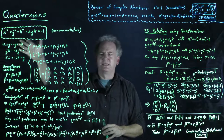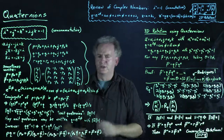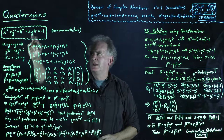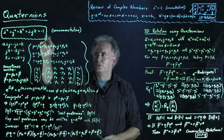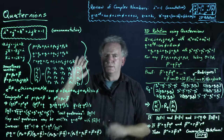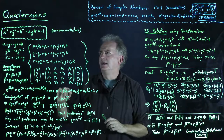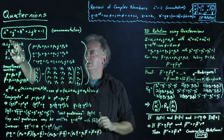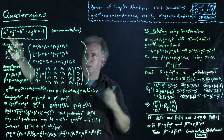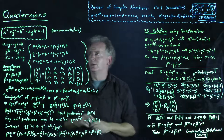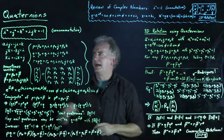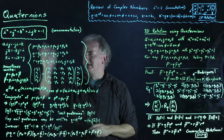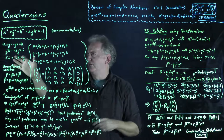The relations that define all of quaternion arithmetic are simply i² = j² = k² = ijk = -1, defining a non-commutative algebra. Essentially we have not 1 but 3 distinct square roots of negative 1: i, j, and k are each a square root of -1. With this non-commutative algebra defined, we can infer several properties.